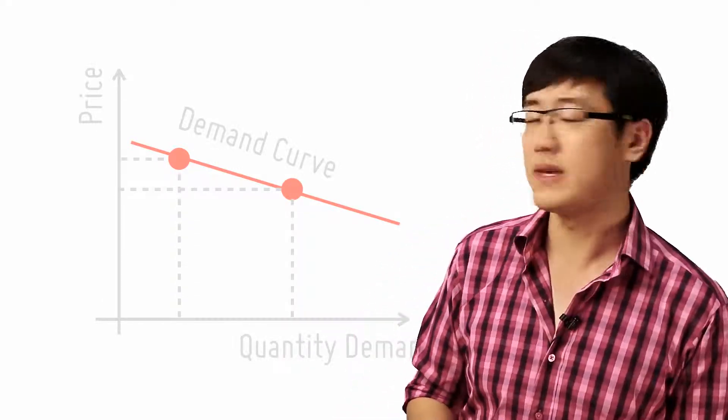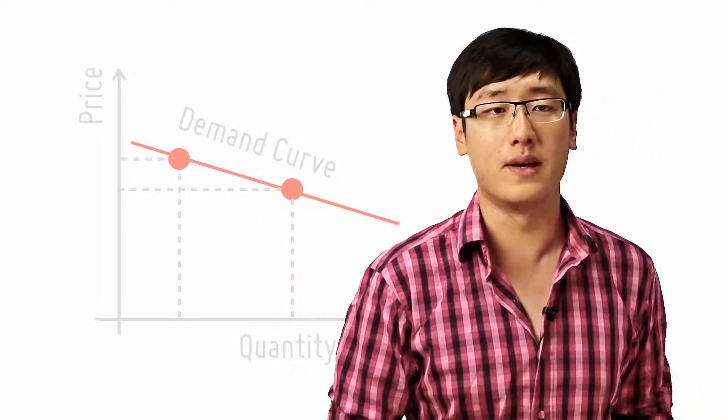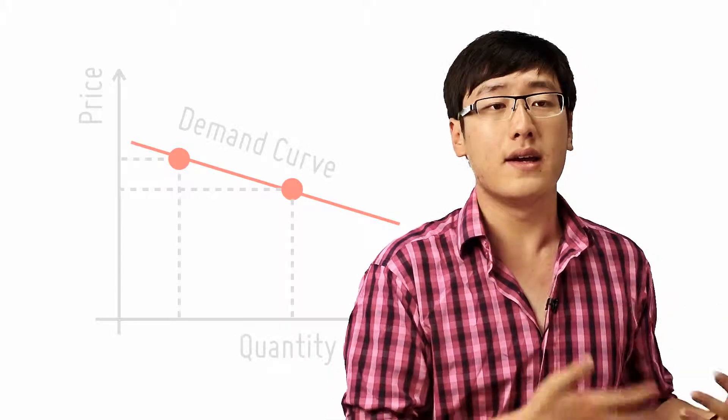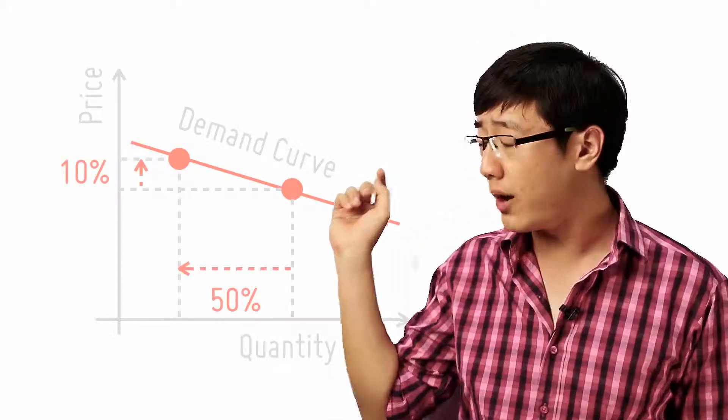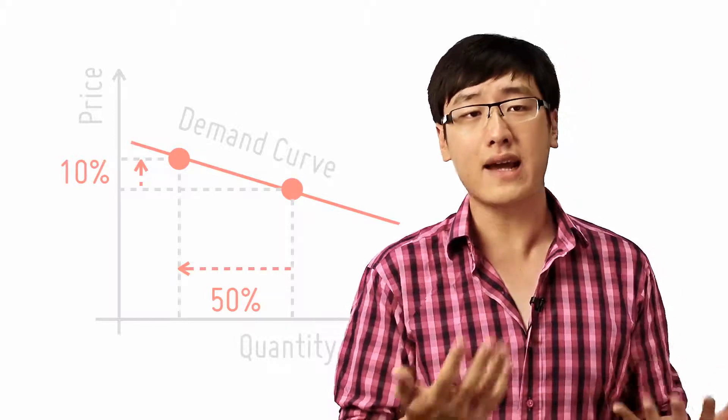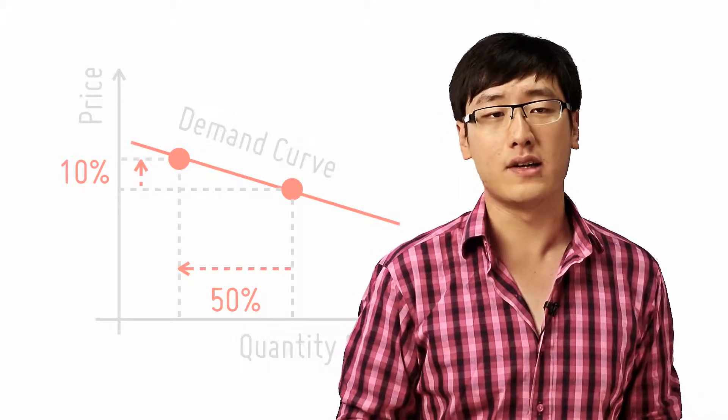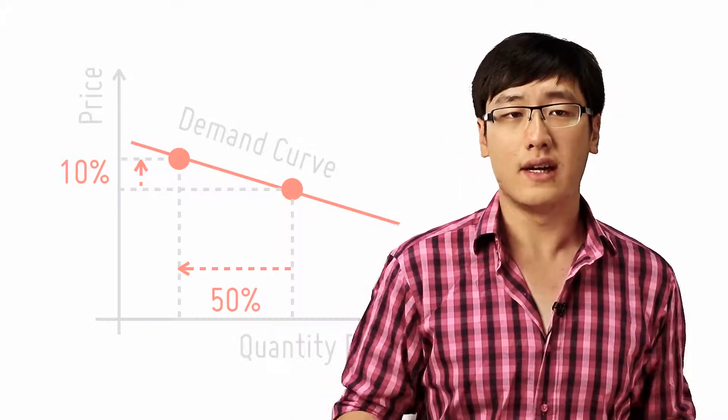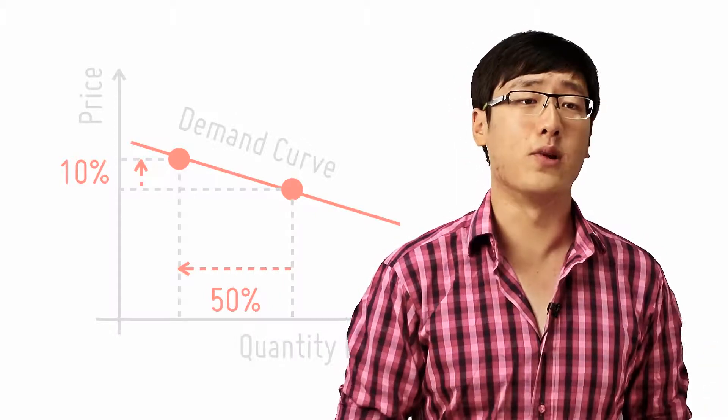For example, we have a demand curve with PED negative 5. This means that when price increases by 10%, quantity drops by 50%, a negative 50% change in the quantity. This fits the slope of the demand curve.